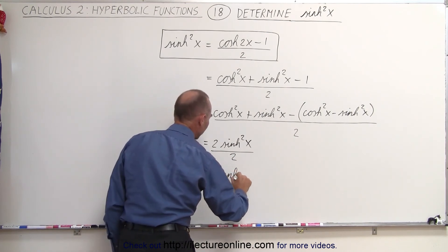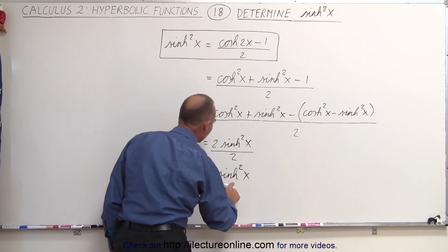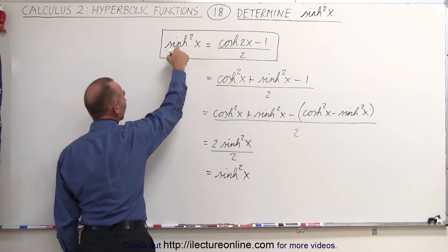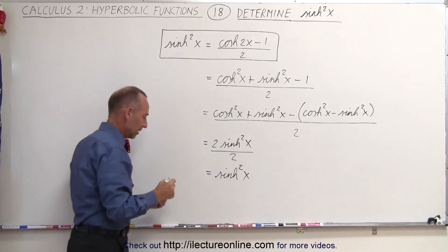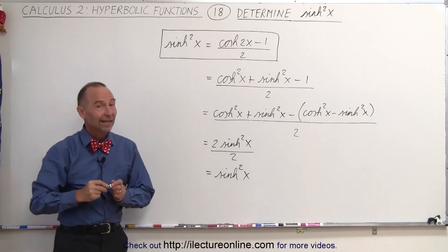we get the hyperbolic sine squared of x, which is what we have on the left side right here, which means that the left side does indeed equal the right side. And that's how we do that.